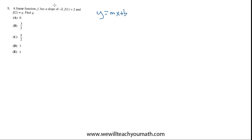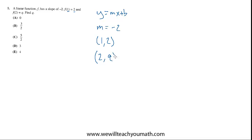So in this case, it's a linear function, so we're talking about a line — we're already thinking maybe y equals mx plus b could be involved. And then we have a slope of negative 2, so m is negative 2. And f of 1 equals 2 — that means when x is 1, y is 2. So the point (1, 2) is a point on the line, where 1 is the x-coordinate and 2 is the y-coordinate. And f of 2 is q, so there's another point on the line where the x-coordinate is 2 and the y-coordinate is some unknown quantity, q.